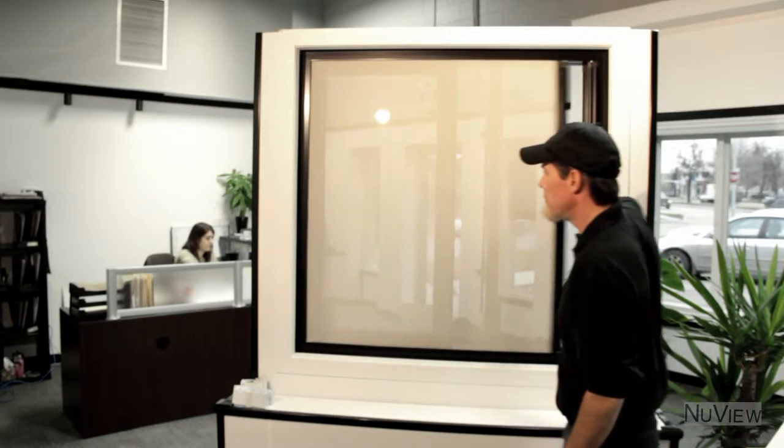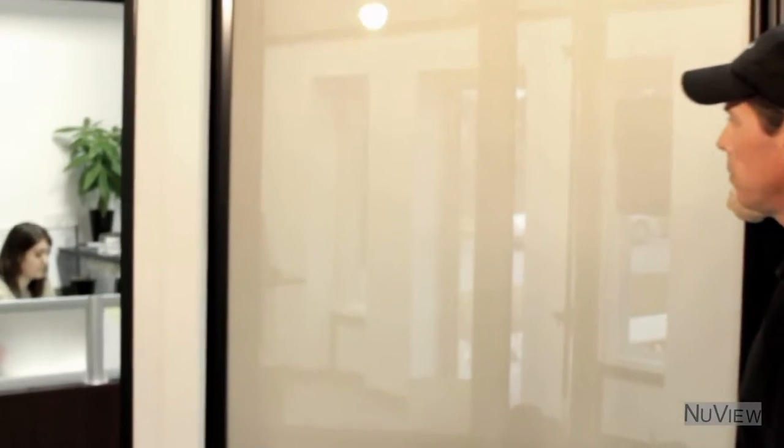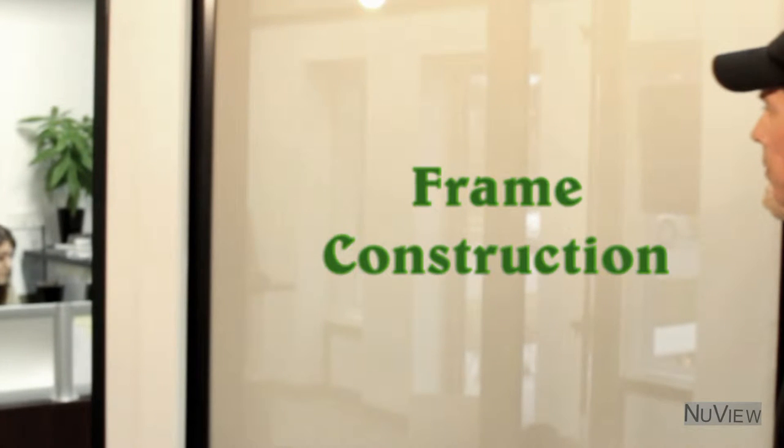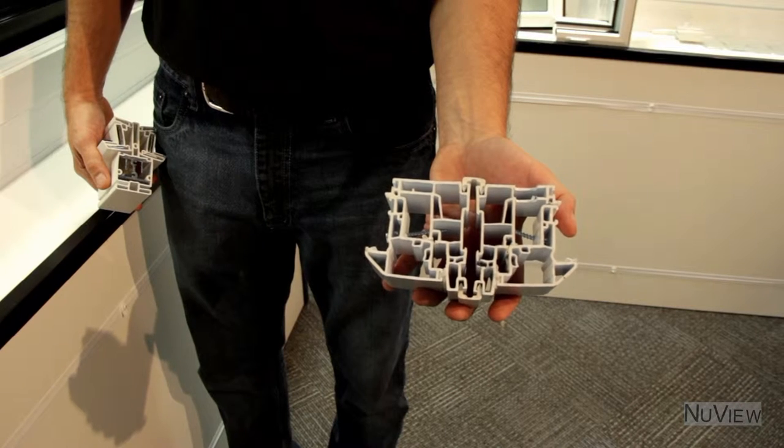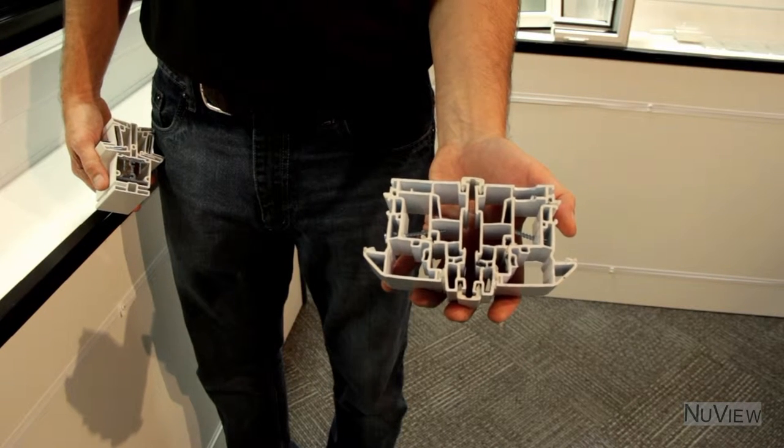Well, here let me show you the main differences. This is a conventional window frame. This is called thermally broken PVC. There's all these chambers inside here and it's all hollow.